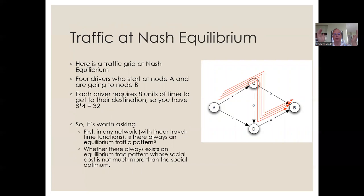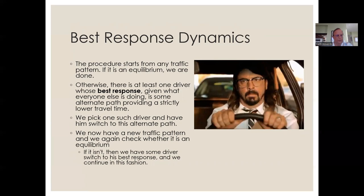It's worth asking whether there always exists an equilibrium traffic pattern, and whether any such equilibrium's social cost is not too much more than the social optimum. Can we have traffic that's close to the social optimum for everybody? The spoiler: there's always an equilibrium whose social cost is at most twice that of the optimum — though the tighter bound is actually 4/3, which is harder to prove, so the book uses a bound of two.